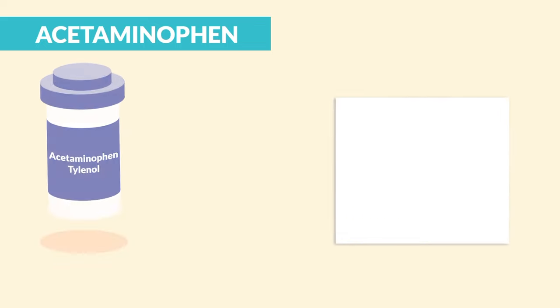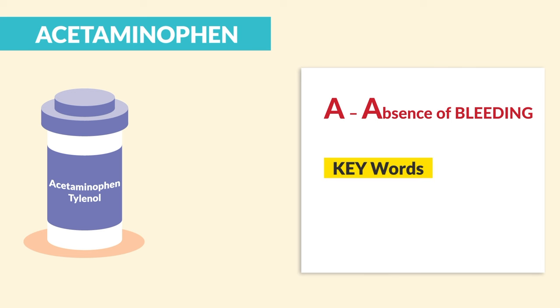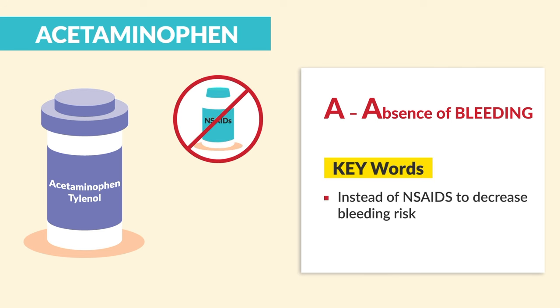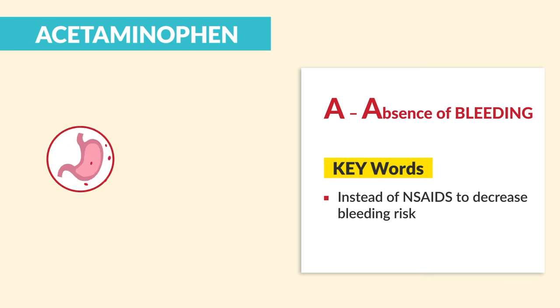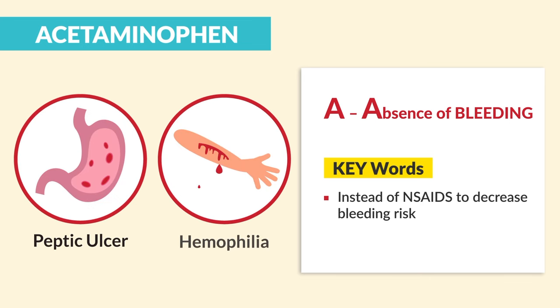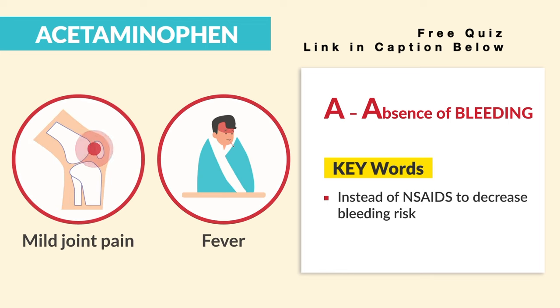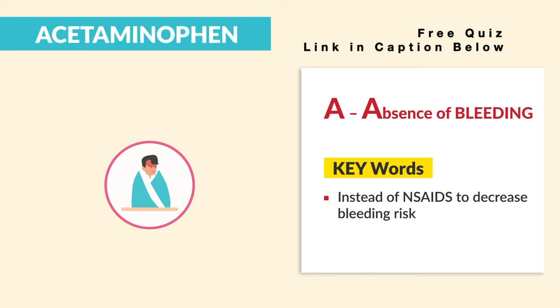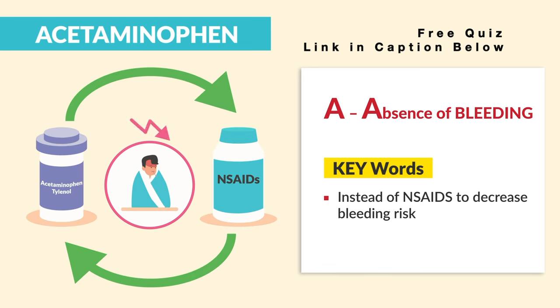Alright guys, let's begin! Now acetaminophen, brand name Tylenol. Remember the A's for acetaminophen. A for absence of bleeding — the key word is that it's used instead of NSAIDs to decrease the bleed risk. Usually used for patients with a peptic ulcer or hemophilia for their mild joint pain or fever. And another plus is that Tylenol and NSAIDs can be used interchangeably to reduce a fever.